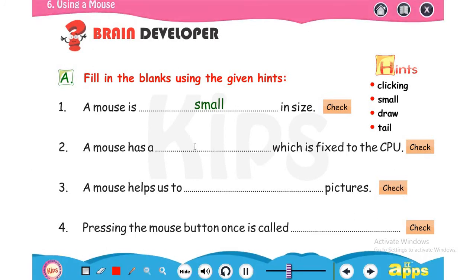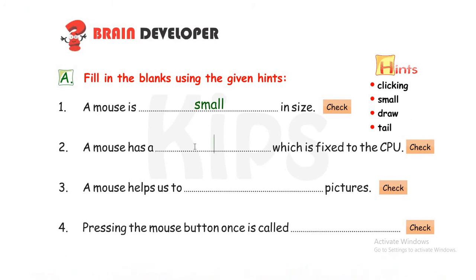A mouse has dash which is fixed to the CPU. So mouse has a tail. We call it as a tail, but the mouse has a wire which is fixed to the CPU. Okay, that wire is called as a tail.